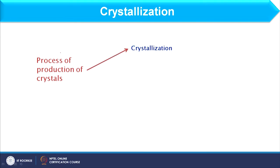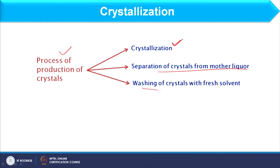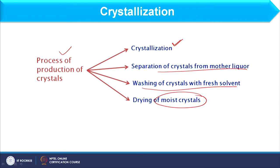As far as the crystallization process is concerned, it has different steps. The first step is crystallization itself, then separation of crystals from the mother liqueur, then washing of the crystals with fresh solvent to remove impurities, and finally drying the moist crystals. In this way we follow different steps to make the product in the form of crystals. Now let us see a few points about supersaturation.